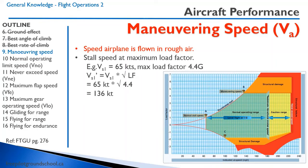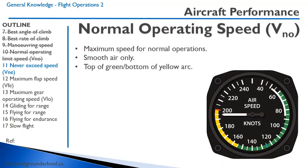To calculate maneuvering speed: the stall speed at a given load factor equals the stall speed times the square root of the load factor. With a max load factor of 4.4G and a stall speed of 65 knots, that gives 65 × √4.4 = 136 knots. The normal operating speed VNO is the maximum speed for normal operations in smooth air — it is the top of the green arc and bottom of the yellow arc, in this case about 155 knots.